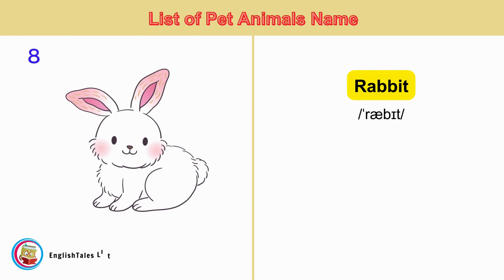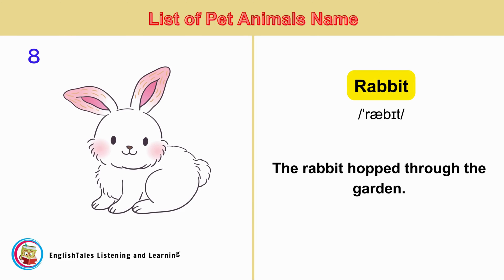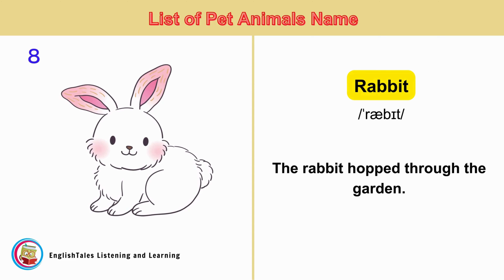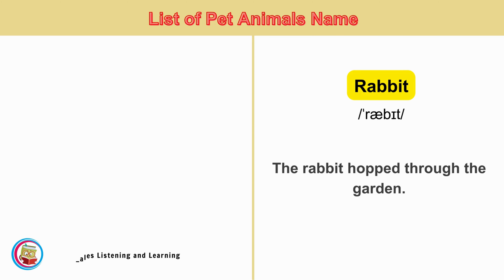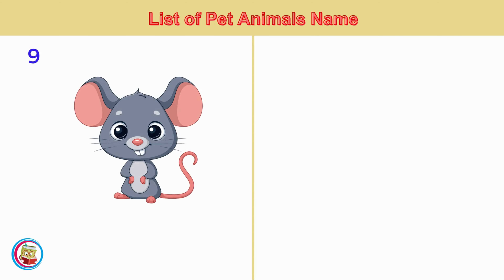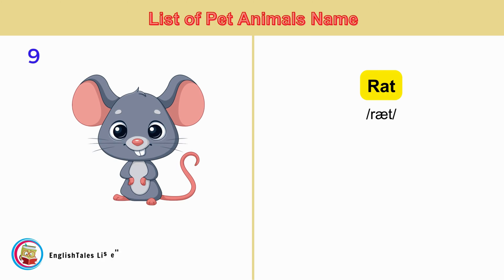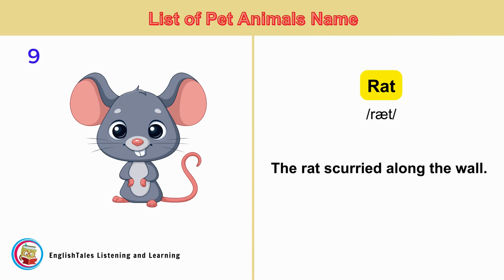Rabbit. The rabbit hopped through the garden. Rat. The rat scurried along the wall.